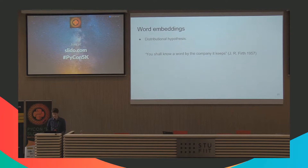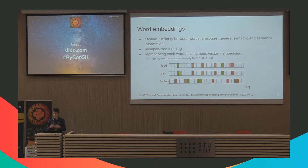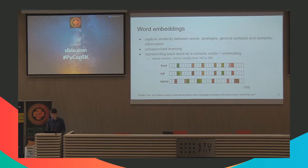We can use word embeddings, which are based on the hypothesis that you shall know a word by the company it keeps. When two words are typically used in the same sentence or paragraph, they are somehow related. Word embeddings can capture similarity between words, analogies, and general syntactic and semantic information, including synonyms. It's unsupervised learning — you don't need labelled training examples, just a corpus of documents. Each word is represented as a dense numerical vector, typically 100 to 300 dimensions, enabling fast operations.